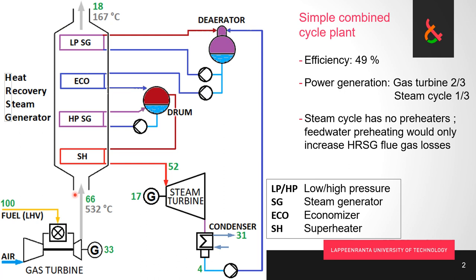The energy balance for the heat recovery steam generator: we're putting 66 units in from the gas turbine exhaust and 4 from the condensate return, so 70 units go in, and 70 should also go out. That gives us 52 here and 18 here — 52 plus 18 makes 70. So the energy balance looks fine.